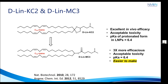DLIN-KC2 and DLIN-MC3 are these lipids. They have excellent in vivo efficacy — MC3 is higher than KC2 — and they have acceptable toxicity and pKa in the range of 6.4. MC3 is easier to make: six steps for MC3 and nine steps for KC2. In our research group, we have made 40 grams of MC3 and 10 grams of KC2 for various immune research projects.